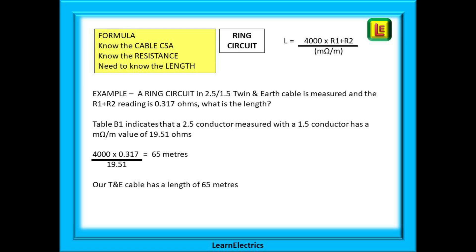Now for a ring circuit. This is pretty much the same as a radial circuit, but we must include the factor of four for the fact that it is a ring. Let us suppose this time that we have read the numbers on the test certificate and it has an R1 plus R2 of 0.317 ohms. How long is the circuit?